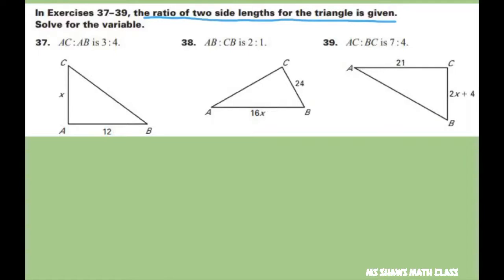So we have the ratio of AC to AB equals 3 to 4. So I know AC here is X and AB here is 12.